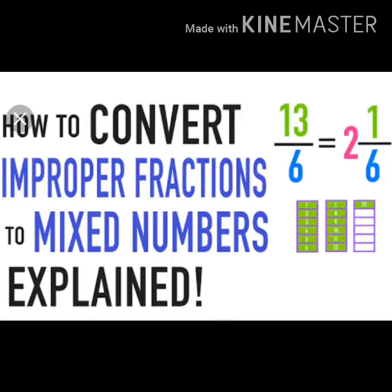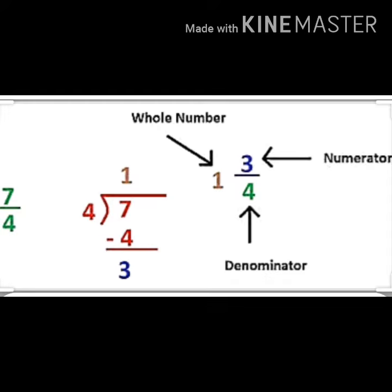Next we will learn how to convert an improper fraction to a mixed fraction. See here, 7/4 is an improper fraction. So we need to divide 7 by 4. 1 times 4 is 4. We subtract 7 and 4, we will get 3. Here the quotient is the whole number, the remainder is the numerator. So the mixed fraction is 1 and 3/4.